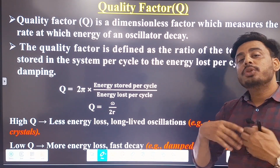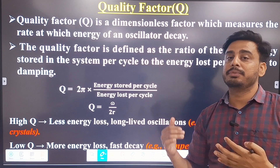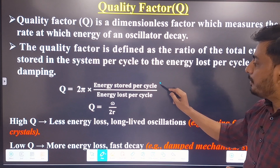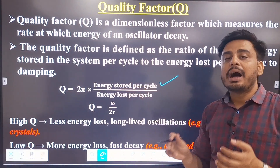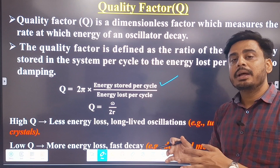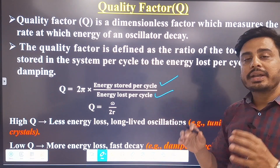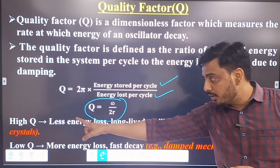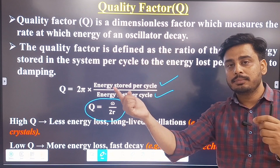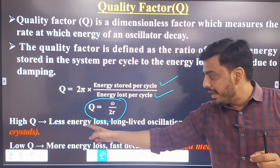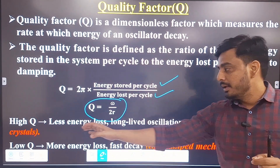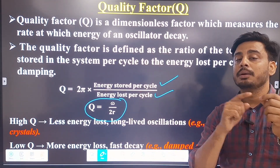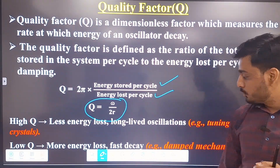The quality factor measures the rate of decrease of energy. It is calculated as the ratio of energy stored per cycle divided by energy lost or decayed per cycle. Its formula is Q equals ω divided by 2r. When the quality factor is high, it takes more time to decrease, meaning less energy is lost per cycle. When Q is low, the energy decreases faster.